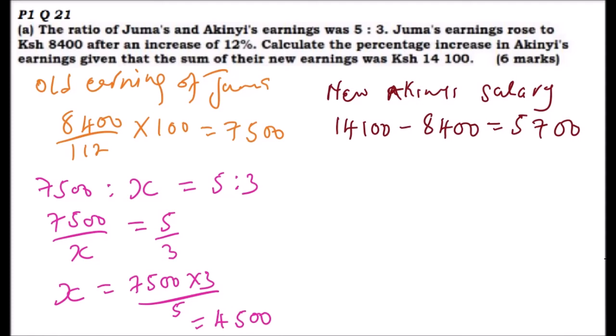Since she was earning 4500, you do 5700 minus 4500. The increase is, using your calculator, 1200.